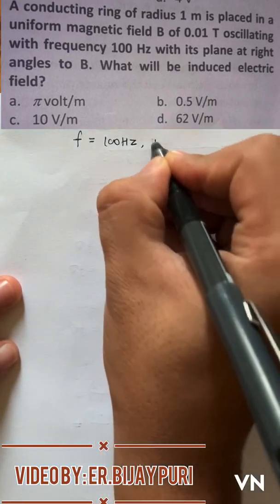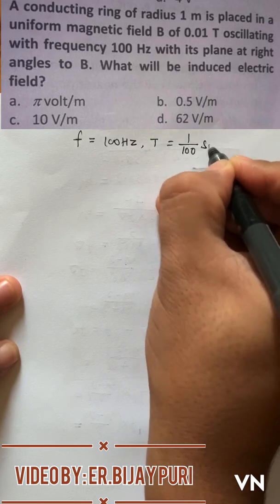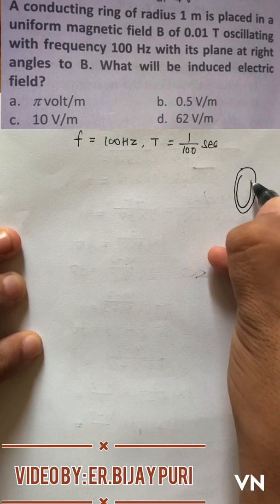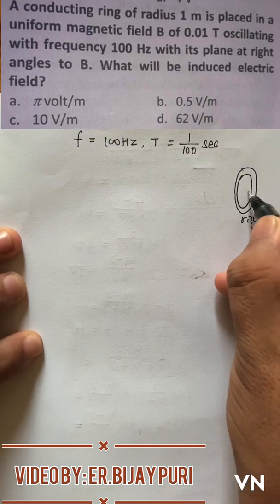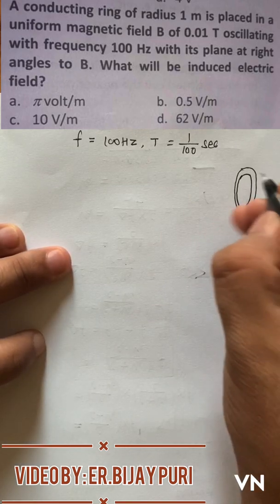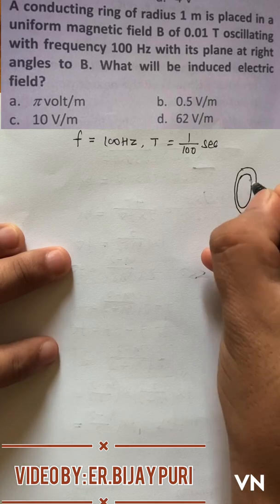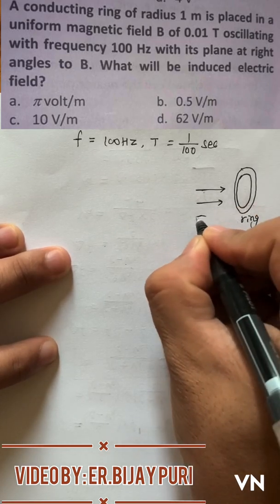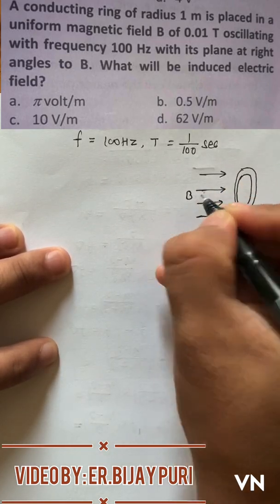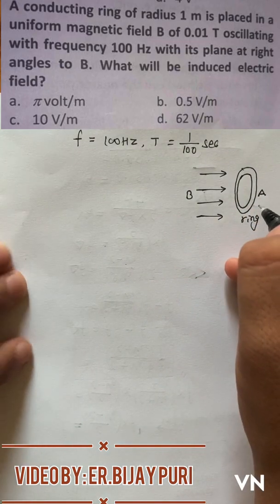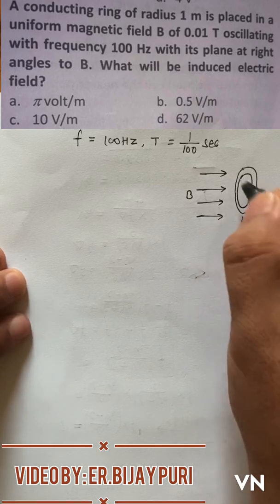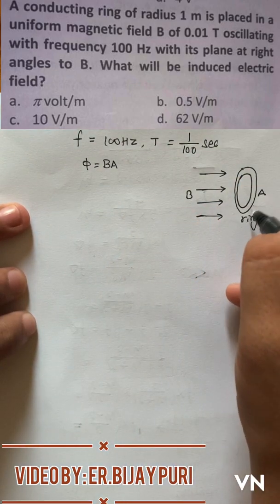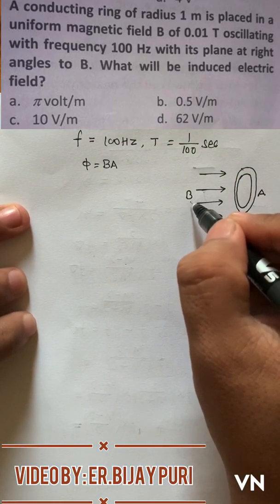So the case is we have oscillating frequency of 100 hertz, that means time period of 1 by 100 second. The case is we have a circular ring whose plane is placed perpendicular to magnetic field B.